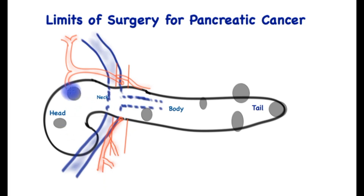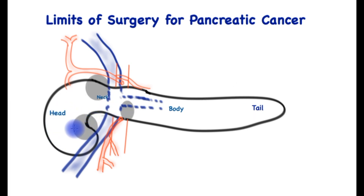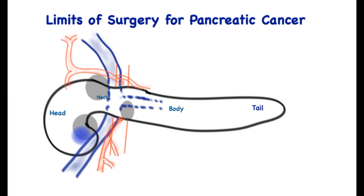In this cartoon the gray blobs represent pancreatic cancer. In general it occurs at only one site, but several are drawn for illustration. When these are away from any of the main veins or arteries, that situation would be resectable pancreatic cancer. When the sites of cancer are in contact with the major veins or main arteries, that situation represents borderline resectable pancreatic cancer.